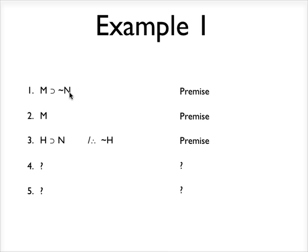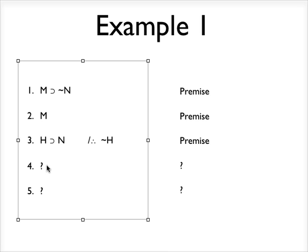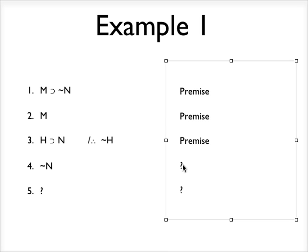So we have that, right? Here's our conditional statement. Here is the antecedent of the conditional statement. And my rule tells me that if I have that much, then I can derive the consequent, which is not N. And I'm going to justify that with the rule, which is modus ponens on lines one and two.